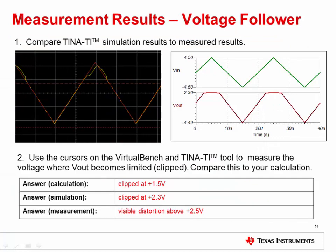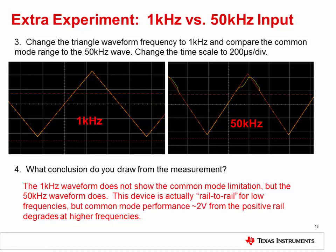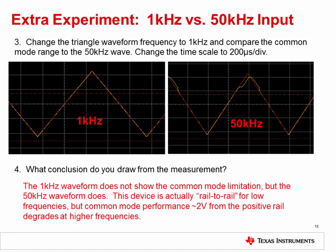The expected measurement results are shown here. Compare the oscilloscope display of the VirtualBench to the simulation results from TINA-TI. Also use the cursors on the VirtualBench and TINA-TI tool to measure the voltage where Vout becomes limited or clipped, and compare this to your calculation. The results have already been entered into the table to allow you to check your results — you may have different results in your experiment. As an extra experiment, you can change the input signal frequency to 1 kilohertz and the time scale to 200 microseconds per division. There is no noticeable distortion or clipping with the 1 kilohertz signal, because the OPA140 is actually rail-to-rail for low frequencies, but at higher frequencies the common mode performance degrades at about 2 volts from the positive rail.